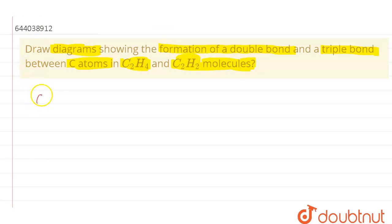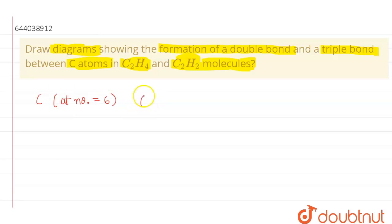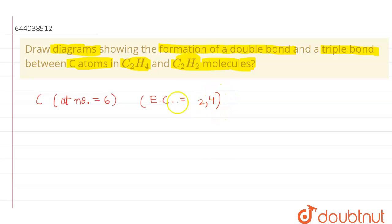First, let us discuss the electronic configuration and atomic number of carbon. The atomic number of carbon is 6 and its electronic configuration is 2, 4. So it has 4 valence electrons and therefore it can make 4 bonds.